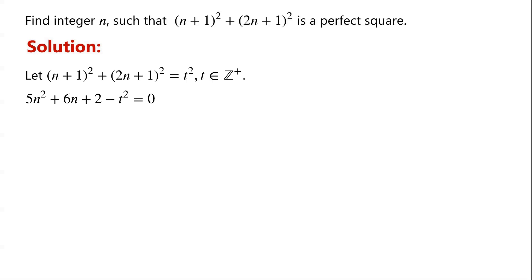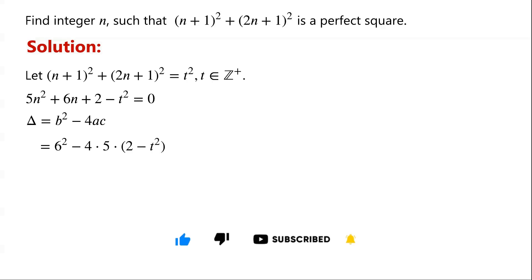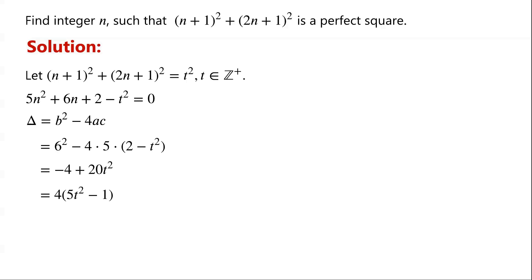This is a quadratic equation in n. The discriminant delta equals b² − 4ac, where a = 5, b = 6, and c = 2 − t². So delta equals 6² − 4×5×(2 − t²), which equals −4 + 20t², which can be written as 4(5t² − 1).